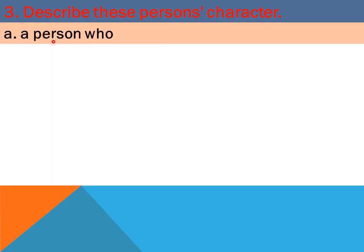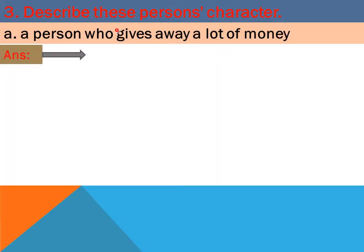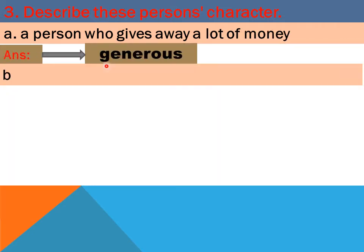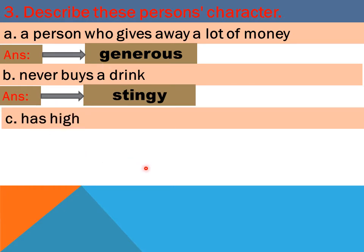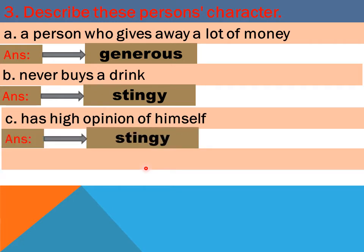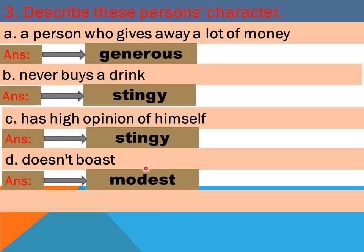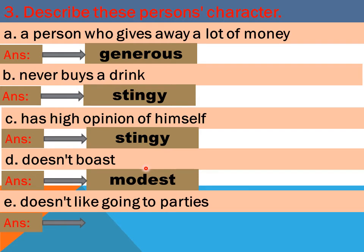Question 3: describe this person's character. A — a person who gives away a lot of money: the answer is 'generous.' B — a neighbor who never buys a drink: the answer is 'stingy.' C — has a high opinion of himself: the answer is 'stingy.' D — doesn't boast: the answer is 'modest.' E — doesn't like going to parties: the answer is 'shy.'